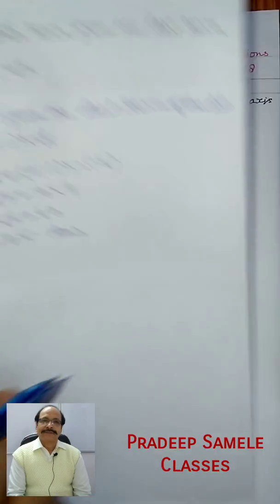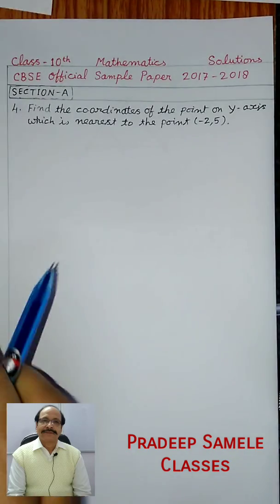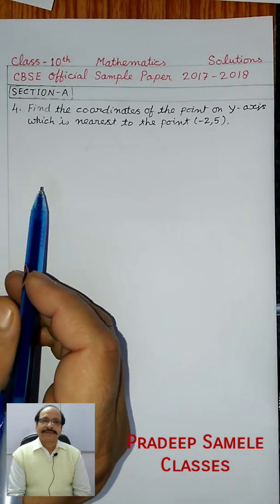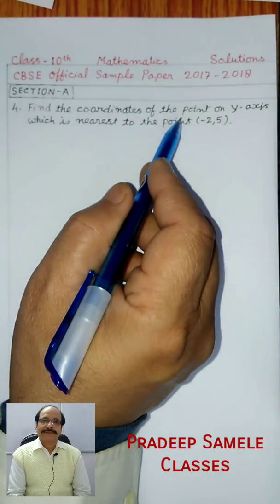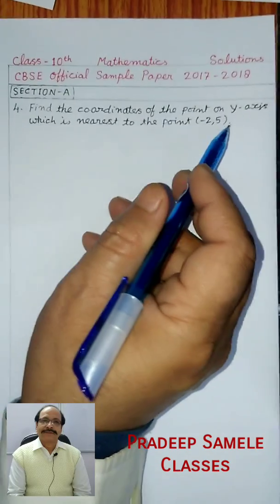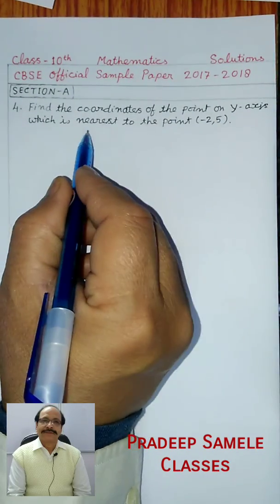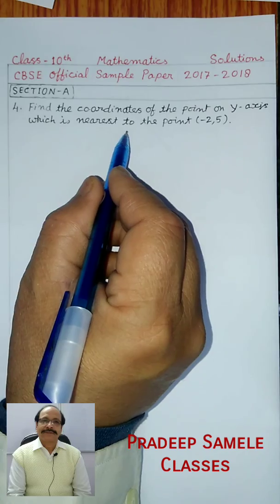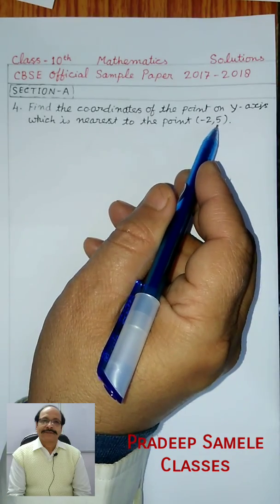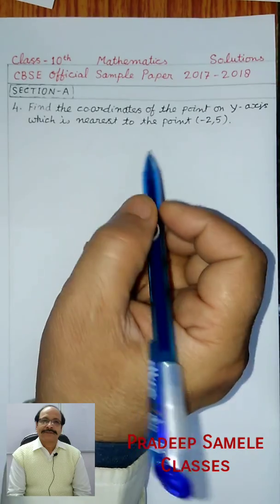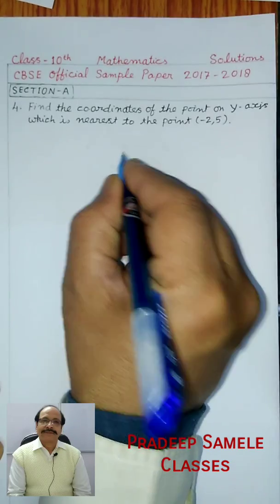How can? Next question. So fourth question, section E: find the coordinates of the point on the y-axis which is nearest to the point (-2, 5). So in this we will draw a graph.